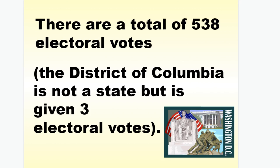There are a total of 538 electoral votes. We also gave the District of Columbia three electoral votes because it's not a state — we wanted that area to be free from local politics. So in order for those people to have a say in who wins the presidency, we gave three electoral votes to the District of Columbia.